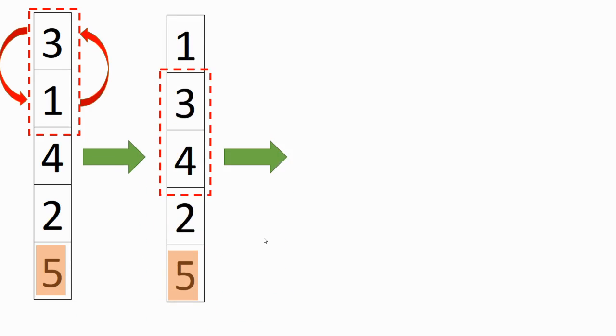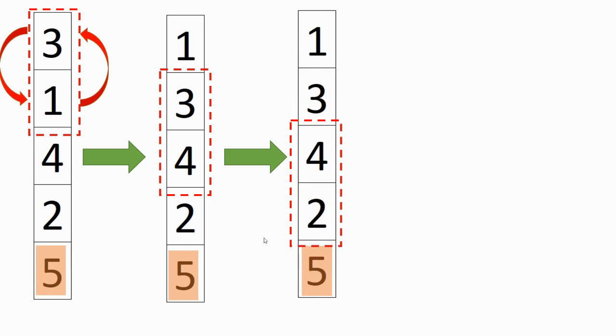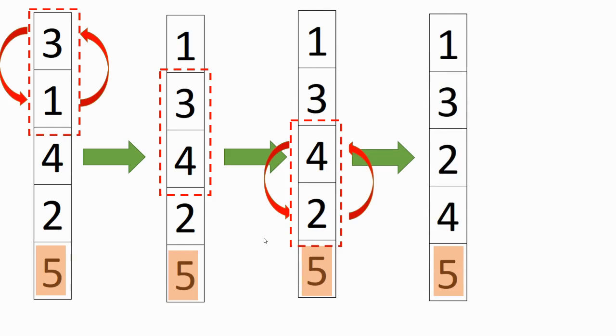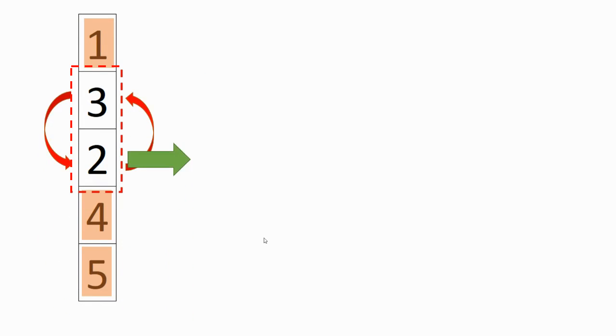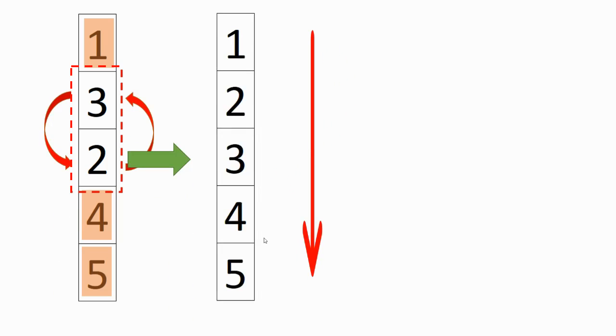We compare the first with the second and swap it. Then we compare the second with the third, and nothing happens because the second is not greater. So we continue and compare the next set and swap that. Then we compare the last one, but we do not need to swap it. We see that we have one more fixed. We keep going and we have three numbers already placed. Then we compare the next set, swap it, and finally we receive this set of numbers in ascending order.